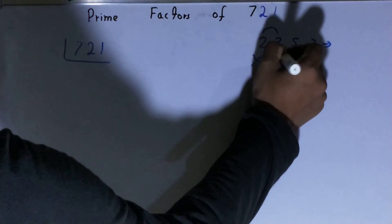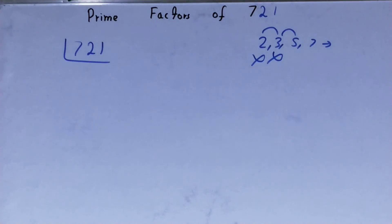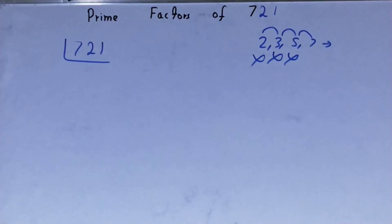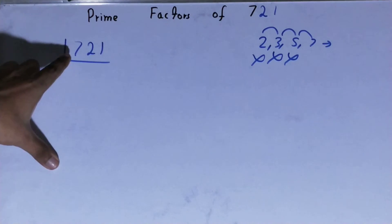Let's check it with 5. The last digit is neither 5 nor 0, so it is also not divisible by 5. Let's check it with 7.